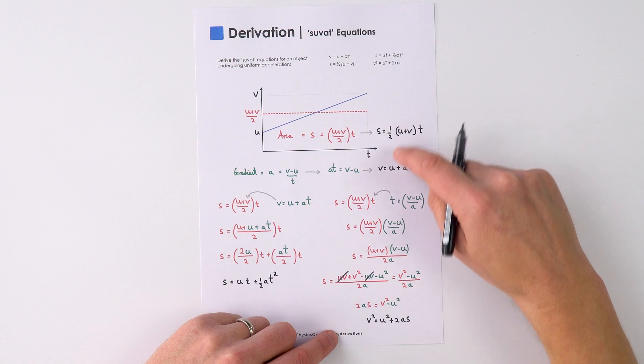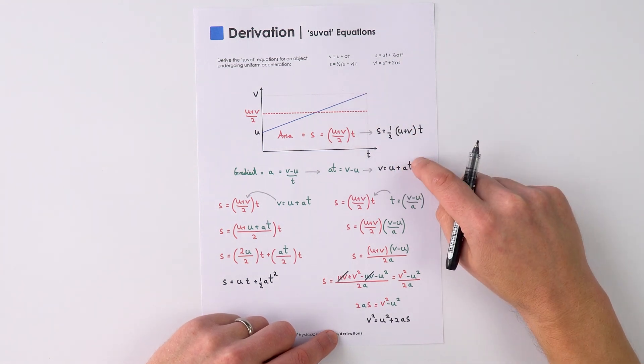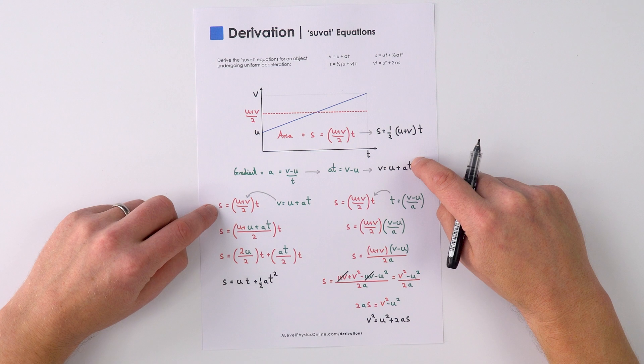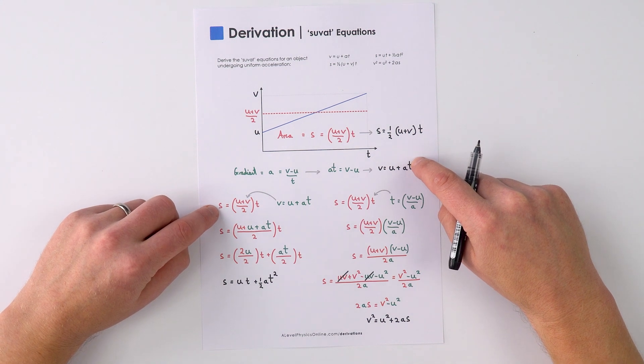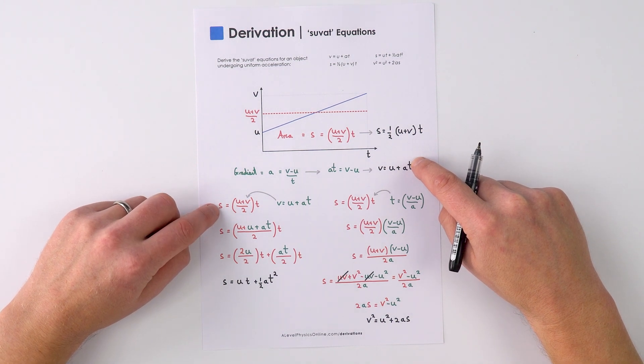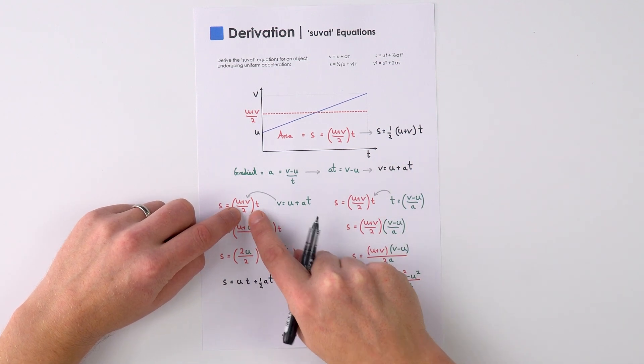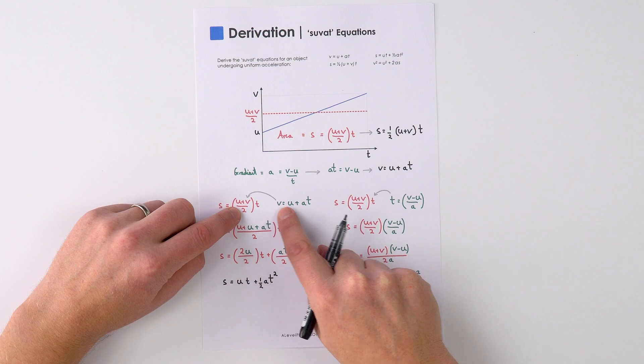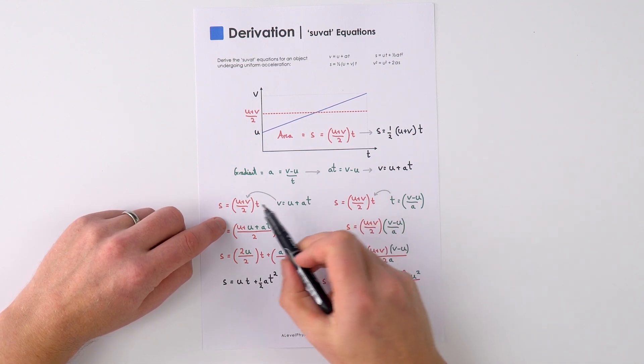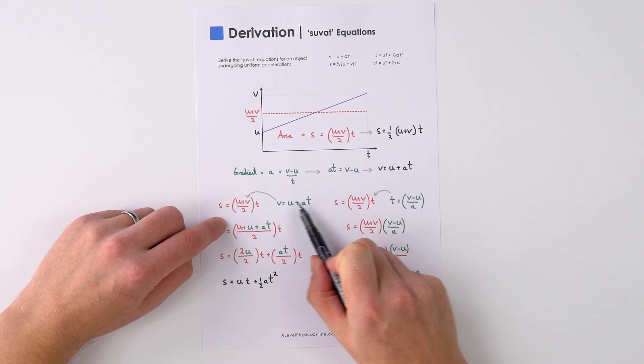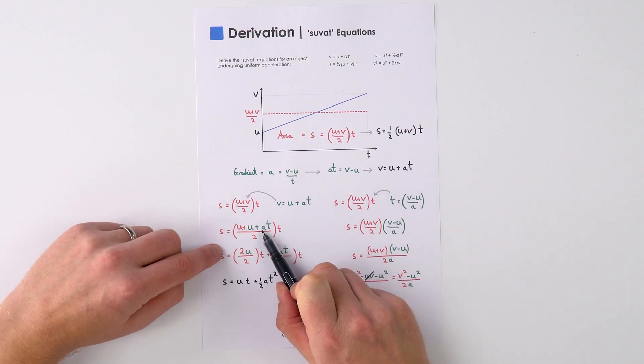Now we're going to be using these two equations here to work out the final two. So what I can say here is that we know the area is equal to the displacement s and that's equal to u plus v over two times t. But we can also say that v equals u plus at. So we can replace this v term with u plus at, which is what I did down here.